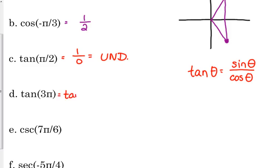So that is equivalent to the tangent of π. π is the negative x-axis, so its y coordinate is 0, its x coordinate is negative 1. What happens when you divide 0 by a number? It's always 0.